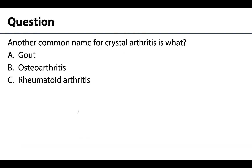Okay, question and answer time. What is another name for crystal arthritis? Hopefully you've landed on A being the correct answer. You more commonly hear crystal arthritis actually referred to as gout or gouty arthritis. It's called crystal arthritis because of those sodium urate crystals that collect in the soft tissues of certain joints, but you could hear it certainly both ways, and I want you to be very familiar with both types of terms.